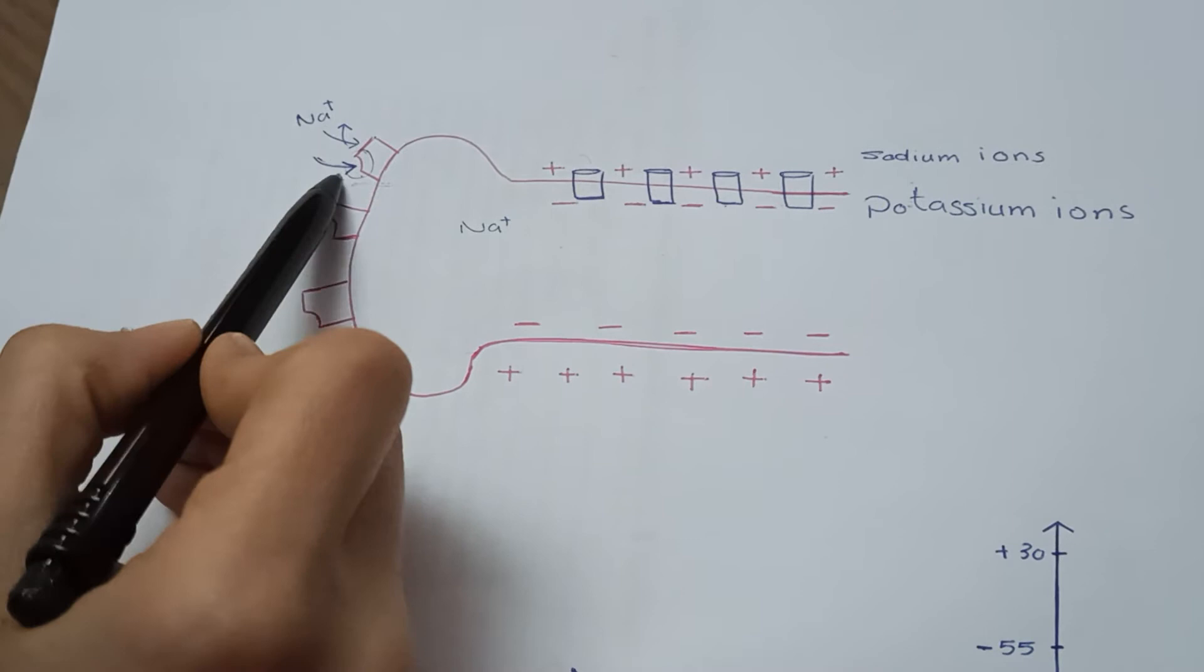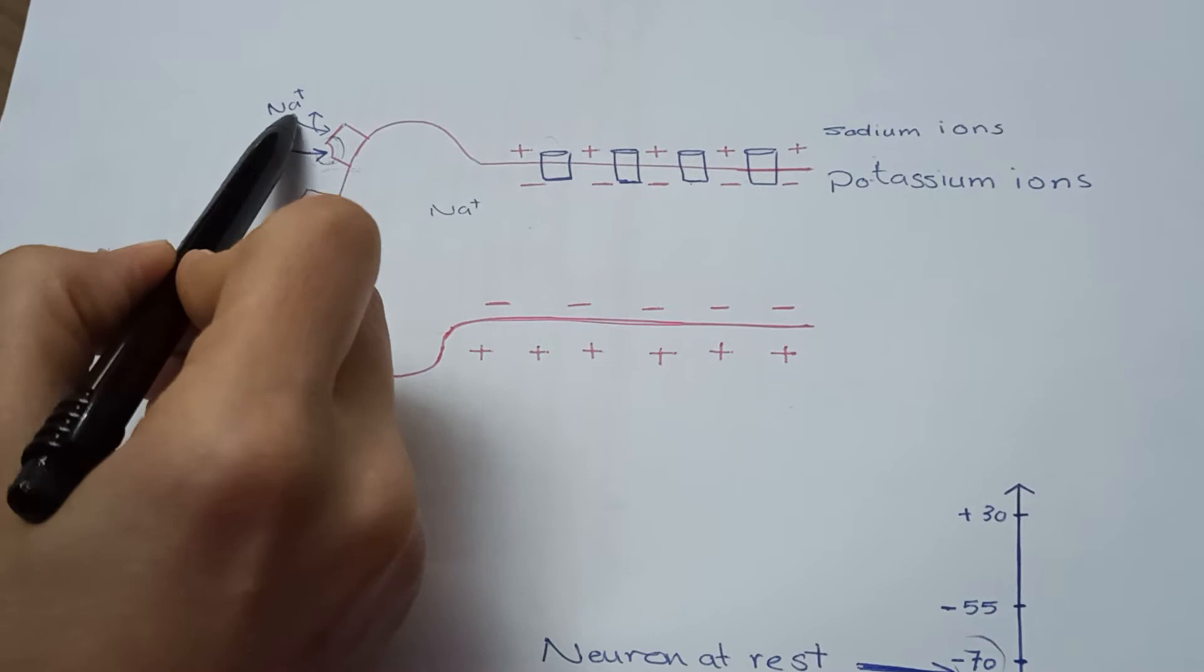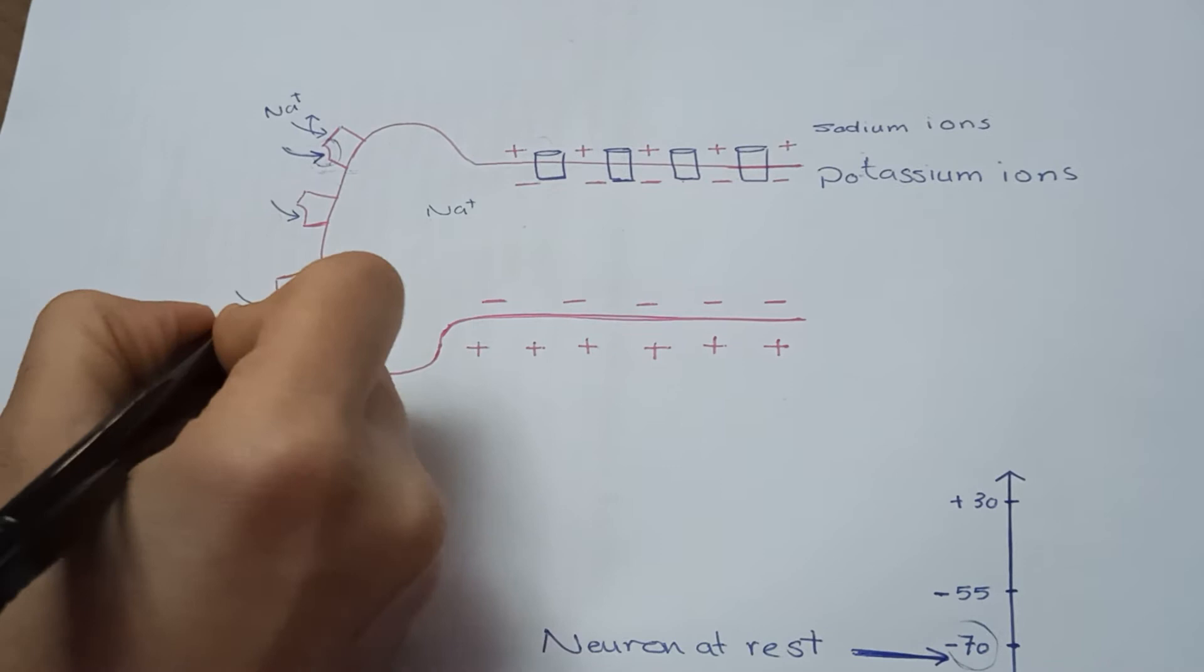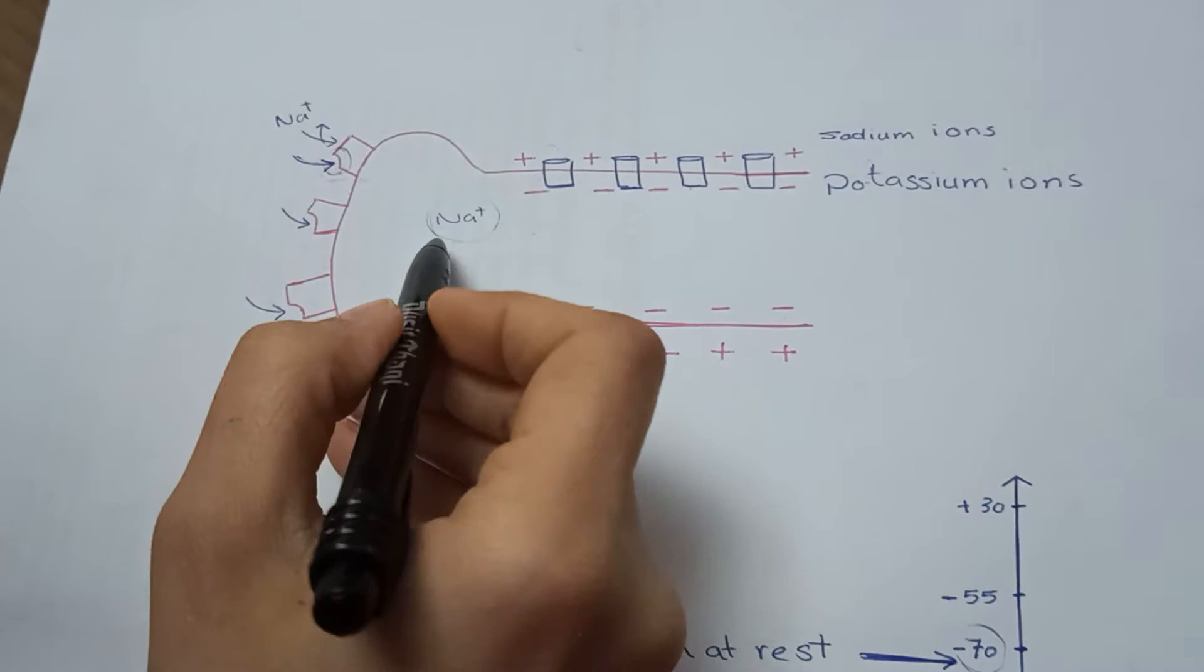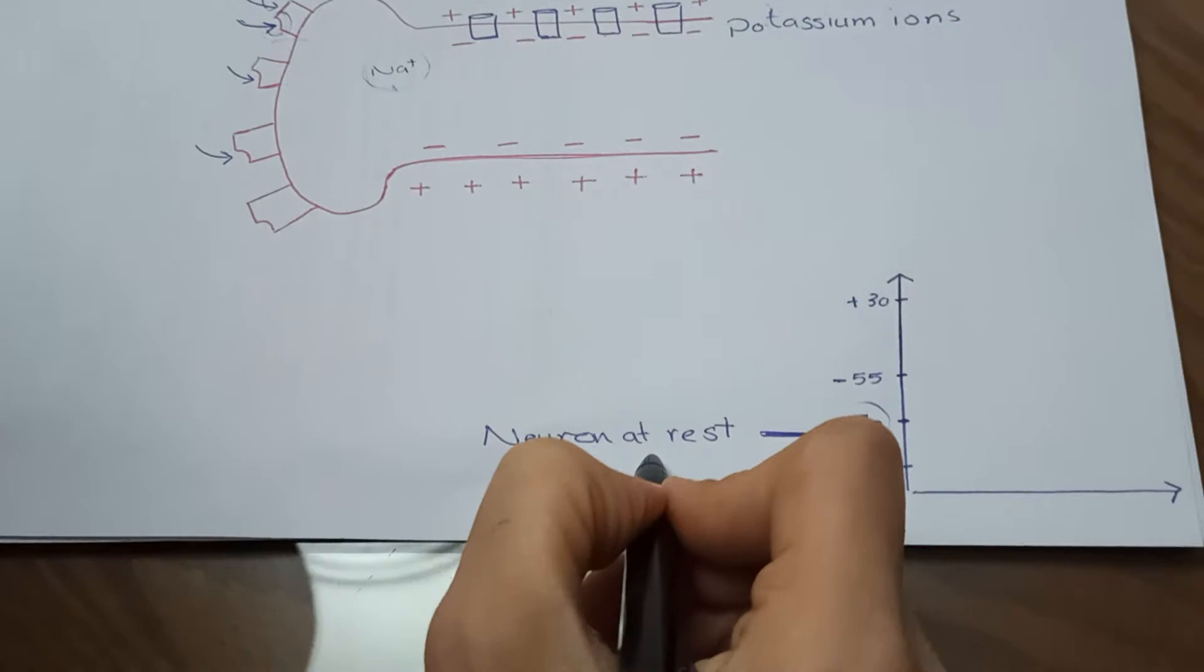Here the neurotransmitter attaches to the specific receptor, sodium ions start to enter, then at other receptors, and so on. This will increase the positive charge inside the cell. A neuron at rest has an electrical charge of minus 70.